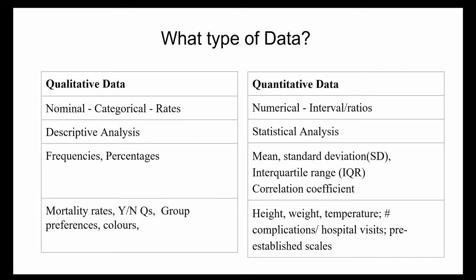Descriptive analysis is the first important step for conducting statistical analysis. It gives you an idea of the distribution of your data, helps you detect outliers and typos, and enables you to identify associations among variables, making you ready to conduct further statistical analysis. Descriptive analysis is often presented as frequencies and percentages, while statistical analysis involves tests to discover the mean, standard deviation, interquartile range, and correlation coefficient.